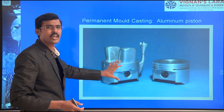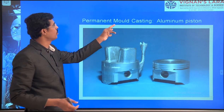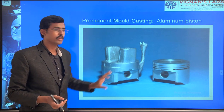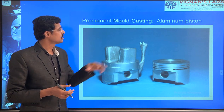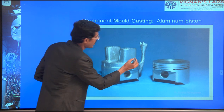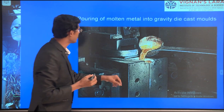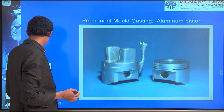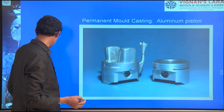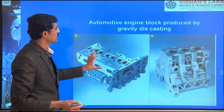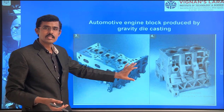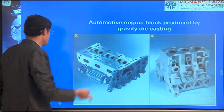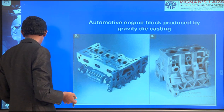Such products are possible with permanent mold casting — aluminum pistons are one example made through gravity die casting. The riser is also visible in the setup. Engine parts are some further examples of gravity die casting products.